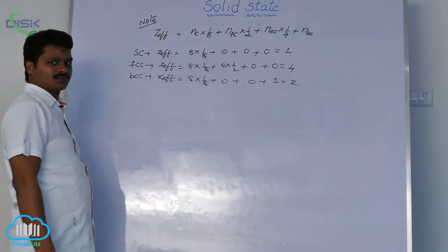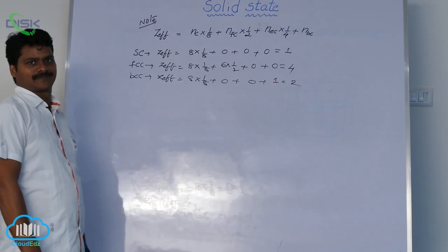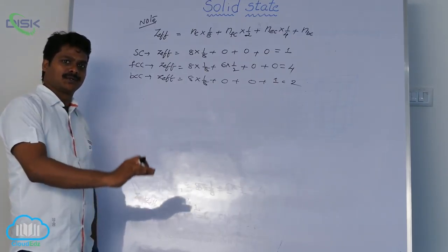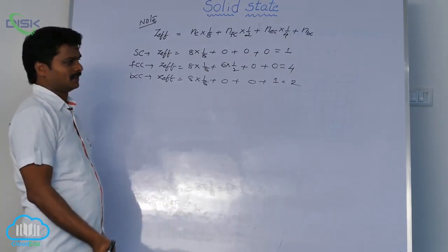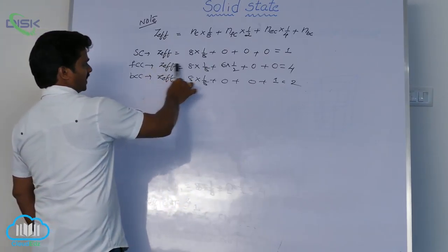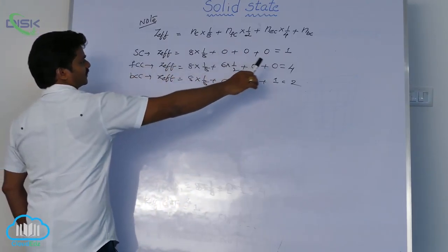Where is the effective number of atoms more? In simple cube, face centered cube and body centered cube. Yes, effective number of atoms is more in FCC. It is 4 in FCC.